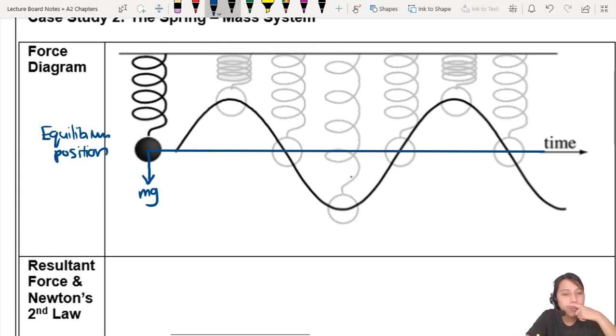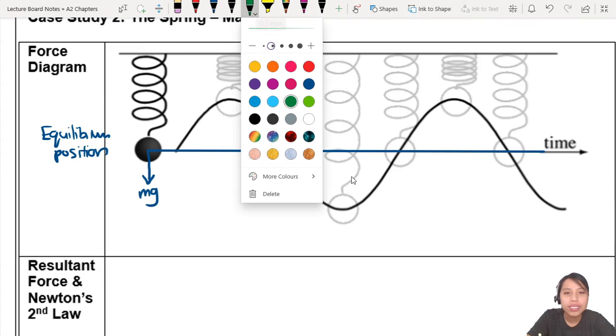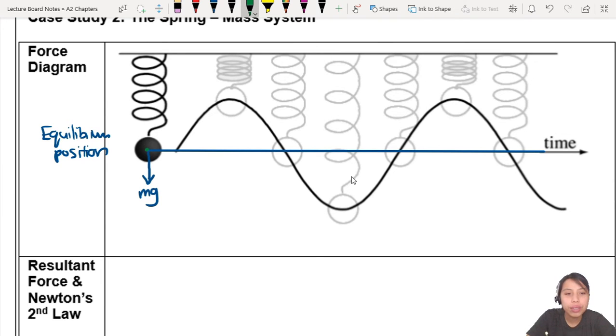But you also have Hooke's Law. What's that force called? Don't say Hooke's Force. It's just a spring force. And this one is your f equals to kx. Or let's just call this f equals to kx naught, just to tell us it's there in the beginning, equilibrium.